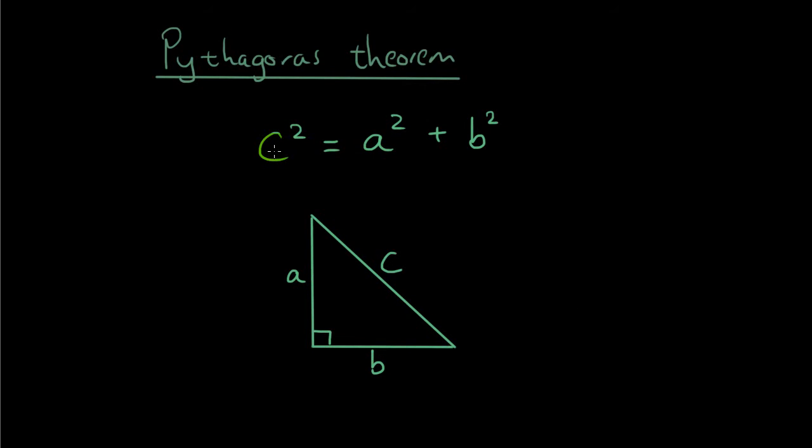And the equation is that whatever c is, c squared is going to be equal to a squared plus b squared. Now, notice that I did not write c equals a plus b. That is totally false.